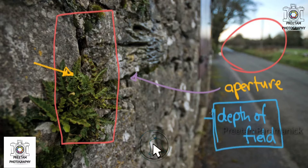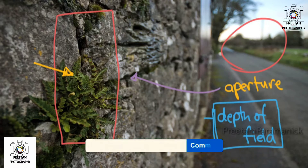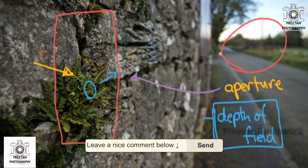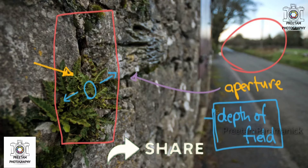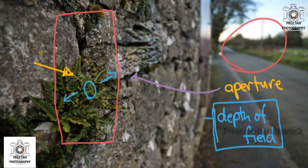If you look it up, depth of field is the range of things in an image that are acceptably in focus beyond a certain focus point. My focus point is right here, and things in this little area are acceptably within focus — that is my depth of field. Everything outside of that is out of focus, and this is determined by the aperture in this image.